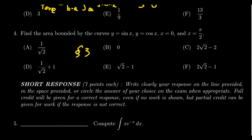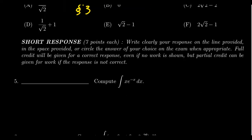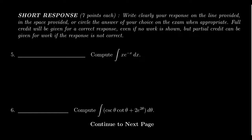That ends the multiple choice section. In the short response section, we also have four questions — questions five through eight — each worth seven points. They are a little bit harder than the multiple choice, but unlike multiple choice, you can get partial credit for partially correct answers. So even though they're worth more points, it's much easier to get at least some of the credit.